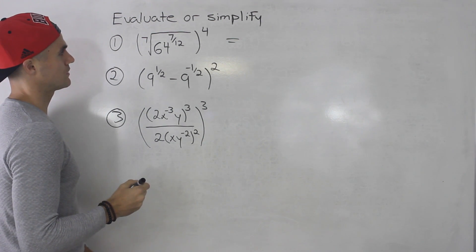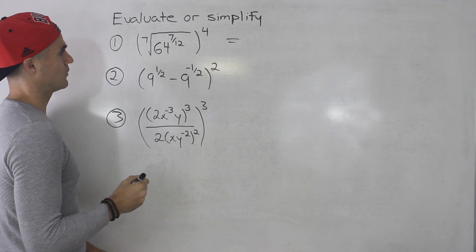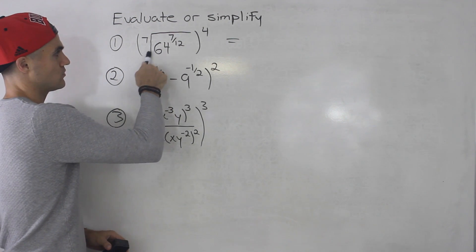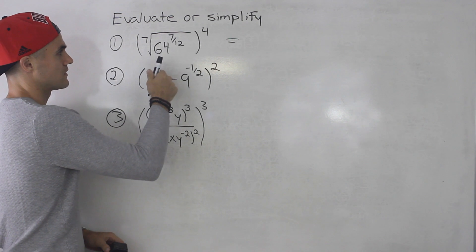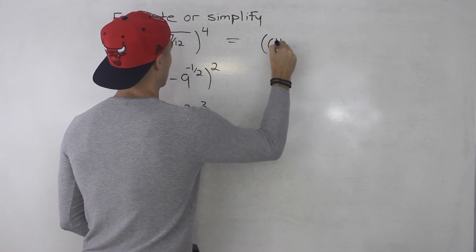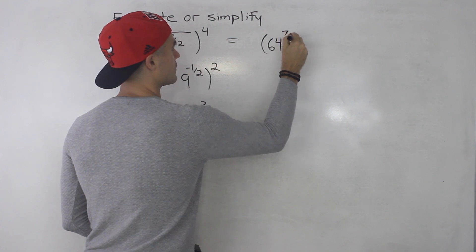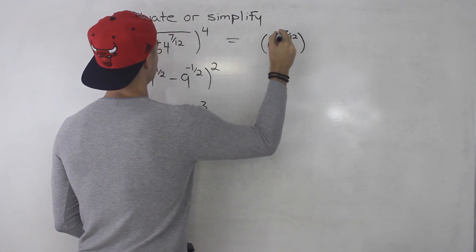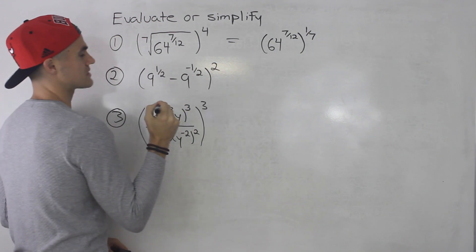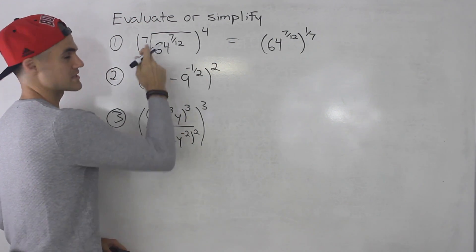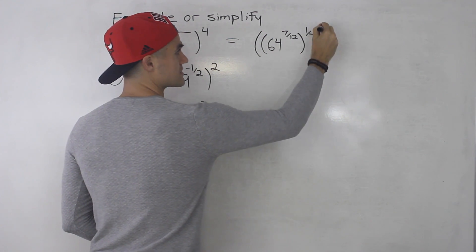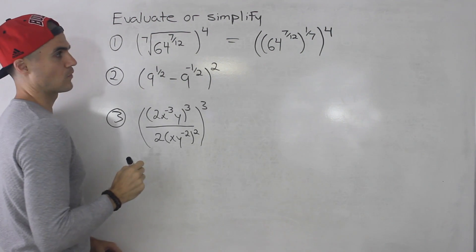The first thing I'm going to do is take any radicals and change them to rational exponents. So this seventh root of the whole expression — 64 to the power of 7 over 12 — I'm going to change it to the power of 1 over 7. That's like the seventh root of that. And then all of that is to the power of 4.